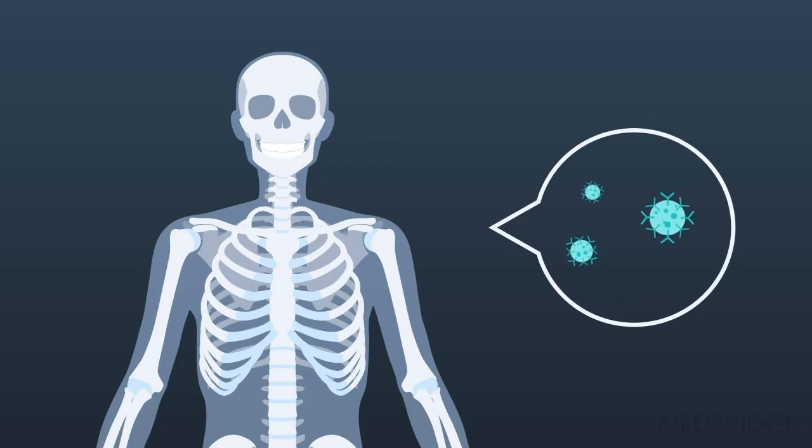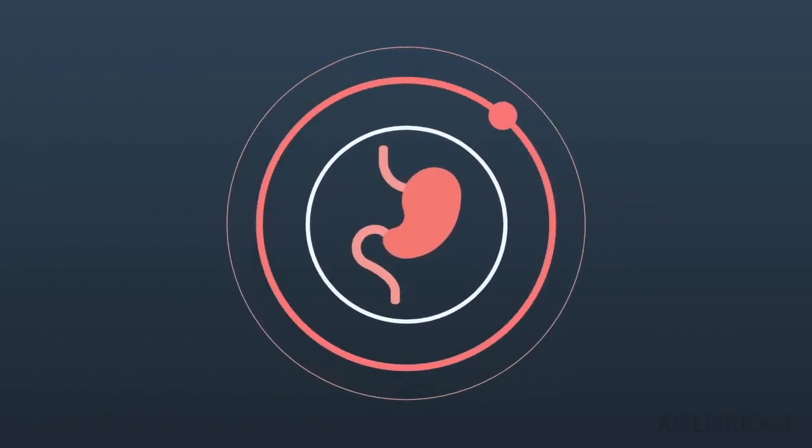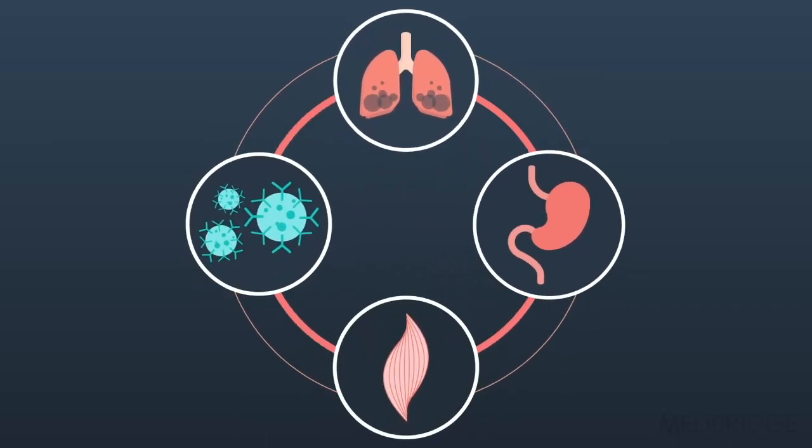And then we see this sort of vicious circle happening where the nutritional compromise is leading to the muscle wasting and the immune compromise, which exacerbates the COPD, which then further interferes with their appetite. And you see that these folks kind of get into a cycle that they can't always get out of.